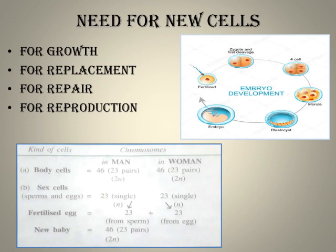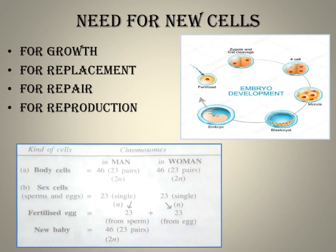These cells start shaping for different functions — tissues are formed, organs like the heart, lungs, skin, and hair are formed. Everything is formed by cell division. You can see in the diagram here how the embryo develops: the fertilized egg is formed, the sperm fertilizes the egg, the zygote forms, and then with the first cleavage, two cells appear.